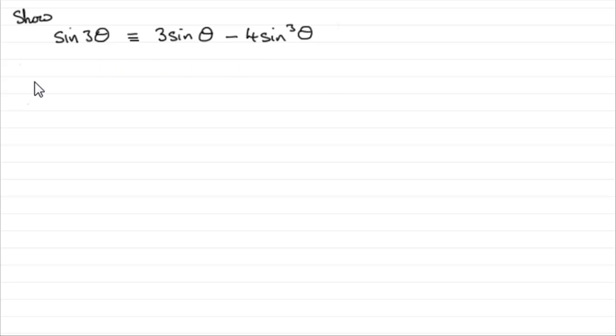Now being an identity, I would always recommend that you write proof, and you can either write LHS, short for left hand side, or you can just copy down the left hand side, which is what I prefer to do. And that's going to be sine 3 theta in this particular case. And we're told that sine 3 theta is the same as sine of 2 theta plus theta, so we'll kick off with that.